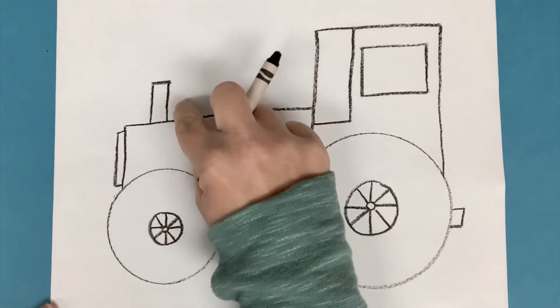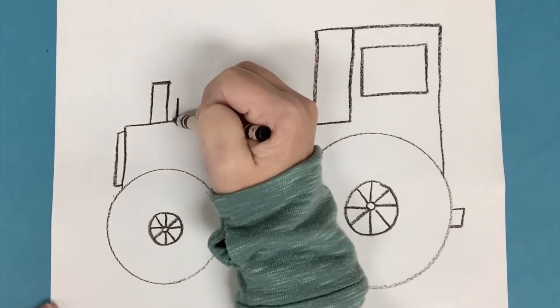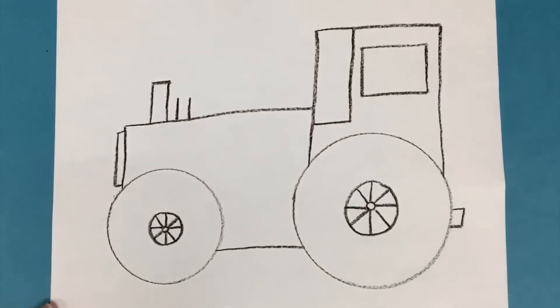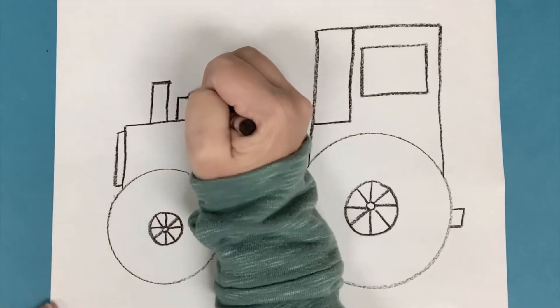Let's do the same thing next to it. But this time we're going to make this one a little bit shorter. Two vertical lines and a horizontal line. And now we have two little exhaust pipes.